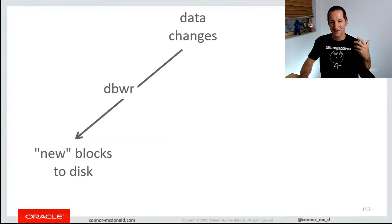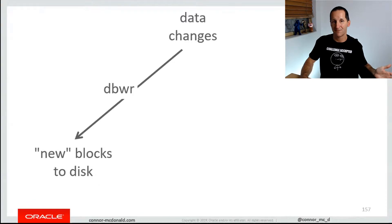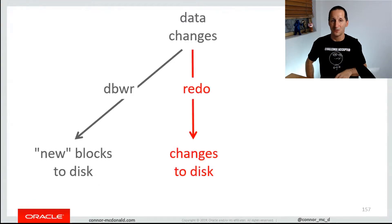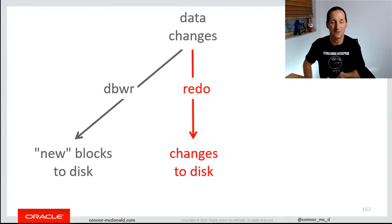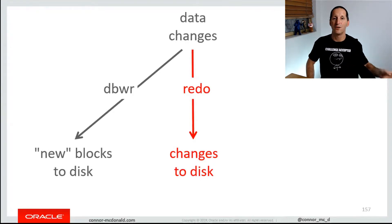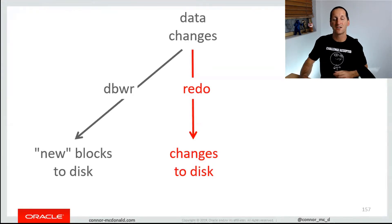How does it work? This is how a database normally works. You make changes to data and those changed blocks get written out to disk by the database writer. The redo, to allow you to roll forward to any version of those blocks, is stored in the redo logs. So we have versions of the data stored in blocks via the DB writer, and we have the ability to roll forward any one of those changes using redo data. To go backwards, we need something new.